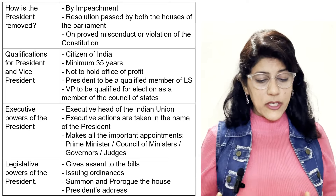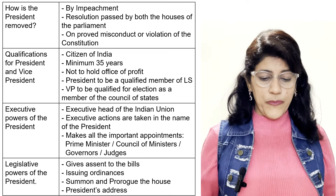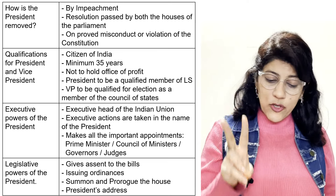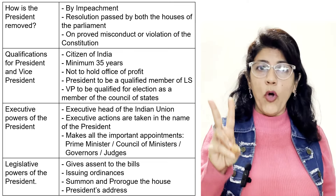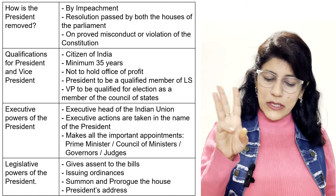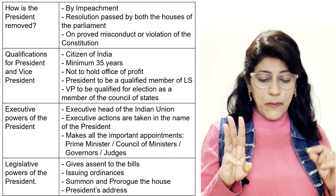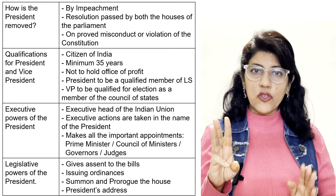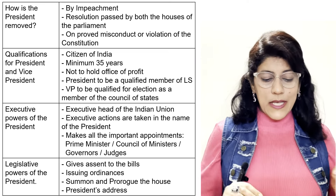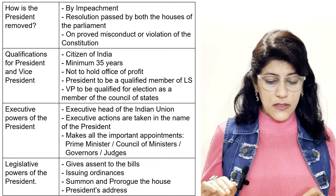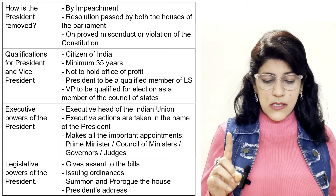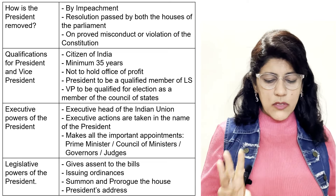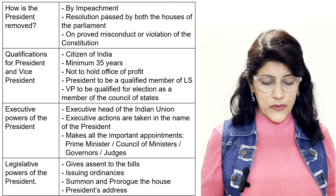Executive powers of the President: executive head of the Indian Union, all executive actions are taken in the name of the President, and makes all important appointments like Prime Minister, Council of Ministers, Governor, judges, Lieutenant Governors, etc. Legislative powers of the President: gives assent to bills, issues ordinances, summons and prorogues the house, and delivers the President's special address.